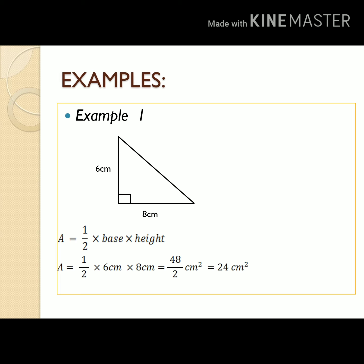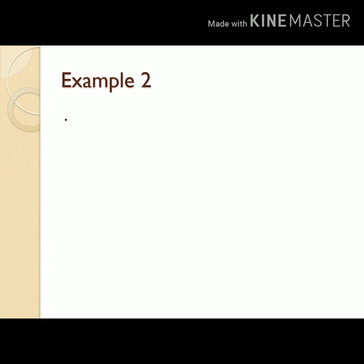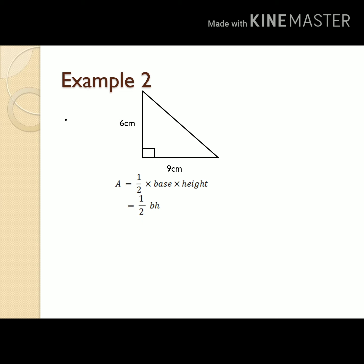Example number two: we have a triangle with dimensions — height 6 centimeters and base 9 centimeters. How can we get the area? We say area equals one half times base times height. Therefore: one half times 9 cm times 6 cm. Six times 9 is 54, divided by 2 we get 27. So the area is 27 square centimeters.